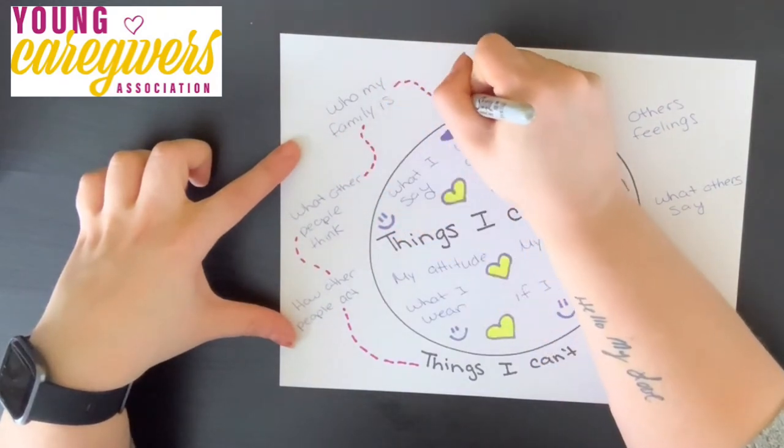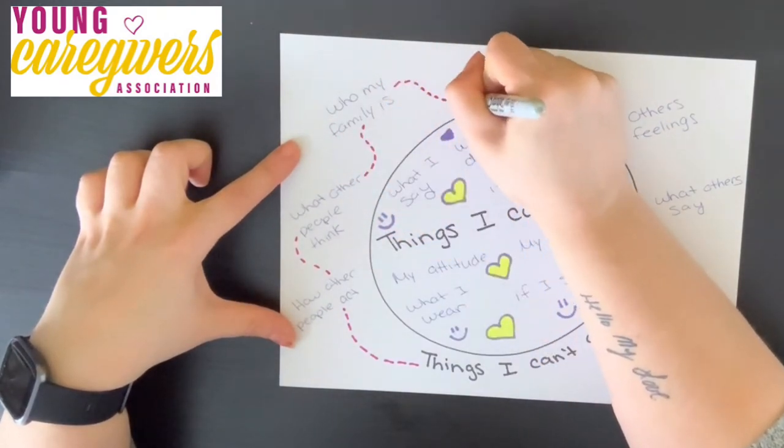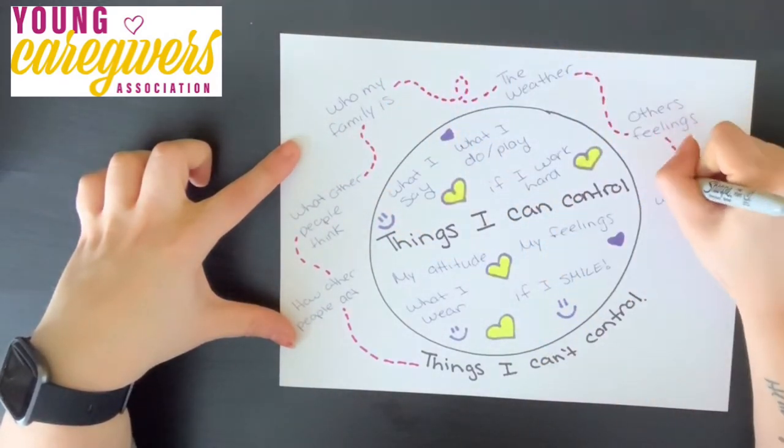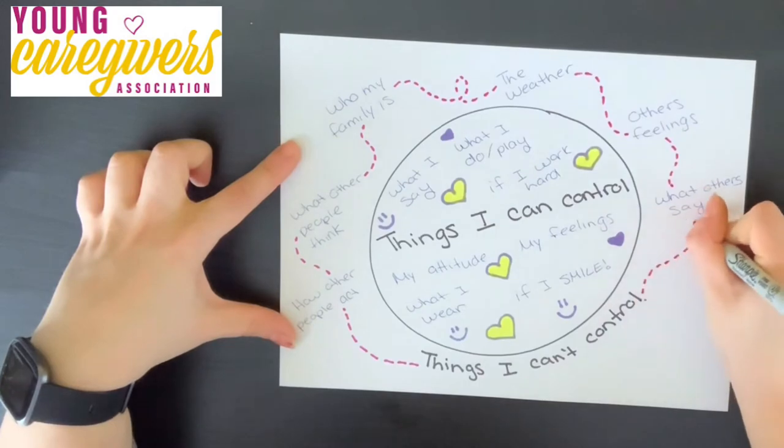You can do this for as long as you want until you decide it is completed. Here's my final product. If I look inside my circle at the things I can control, there are things like what I say, what I do, if I work hard, my attitude, what I'm wearing, and if I'm smiling.